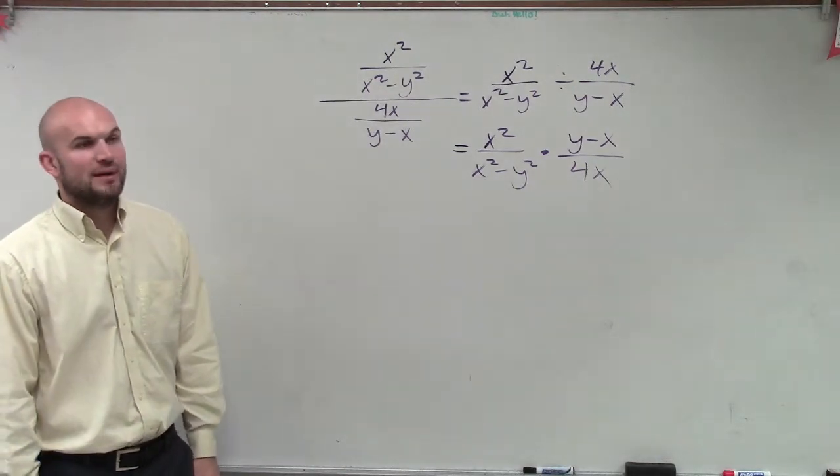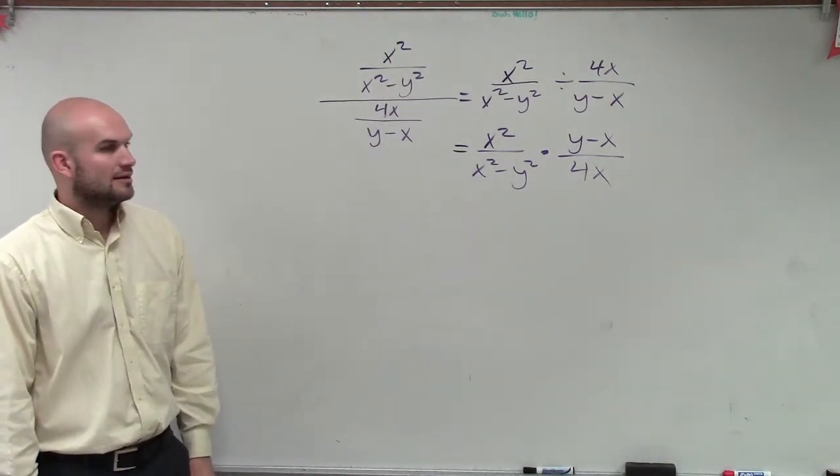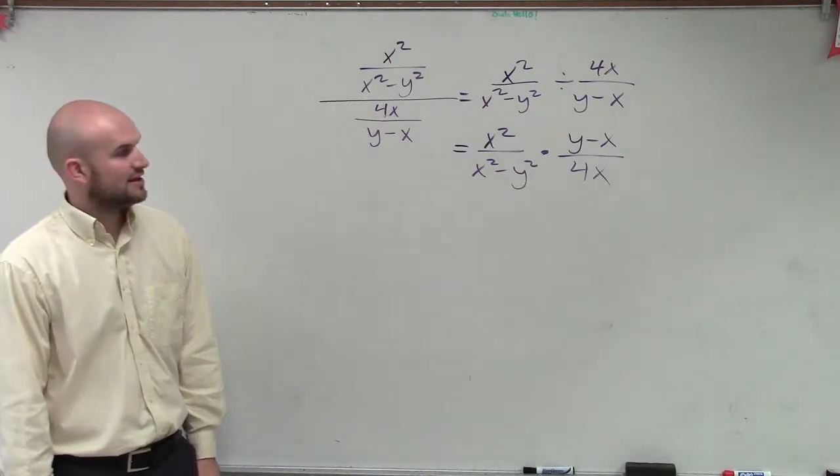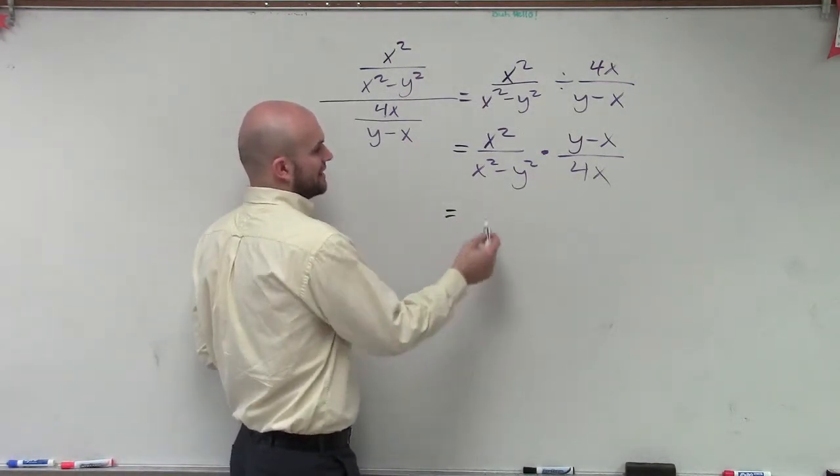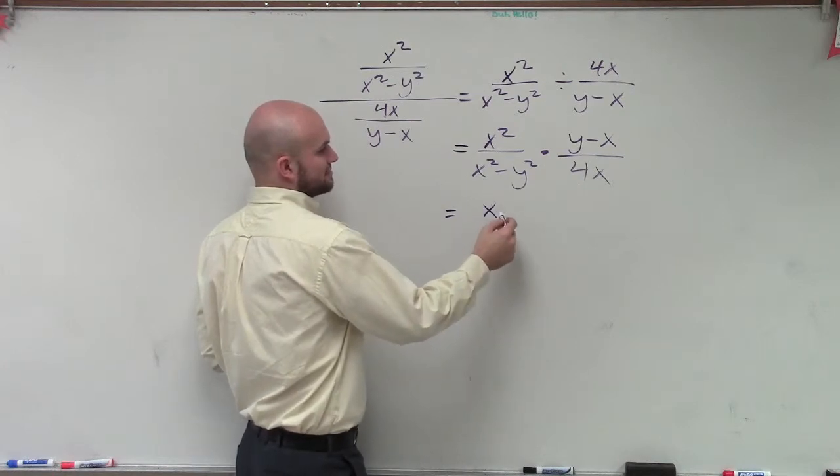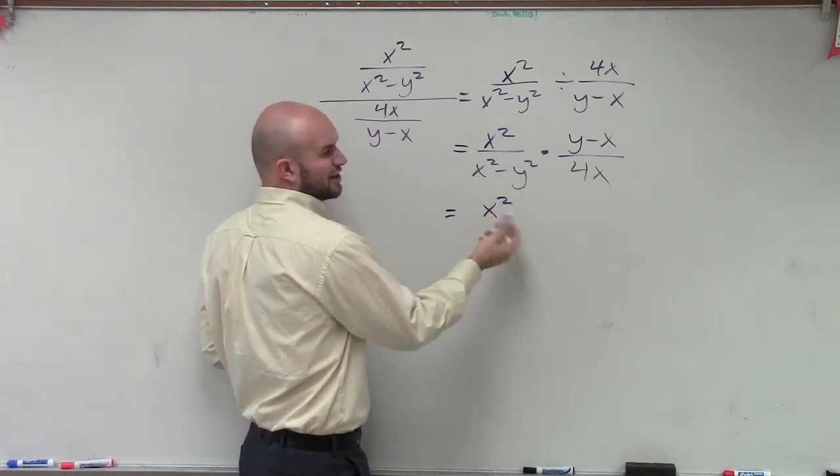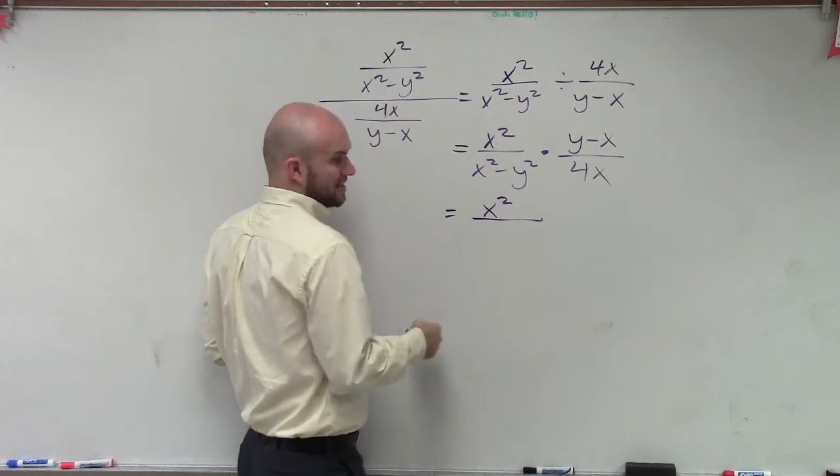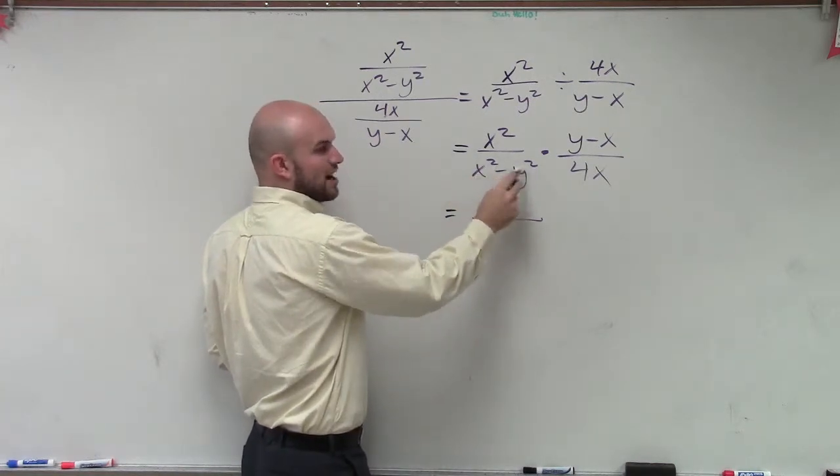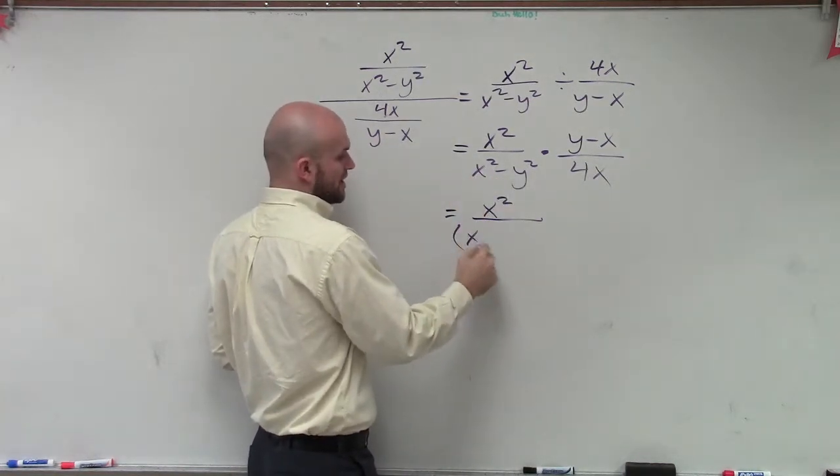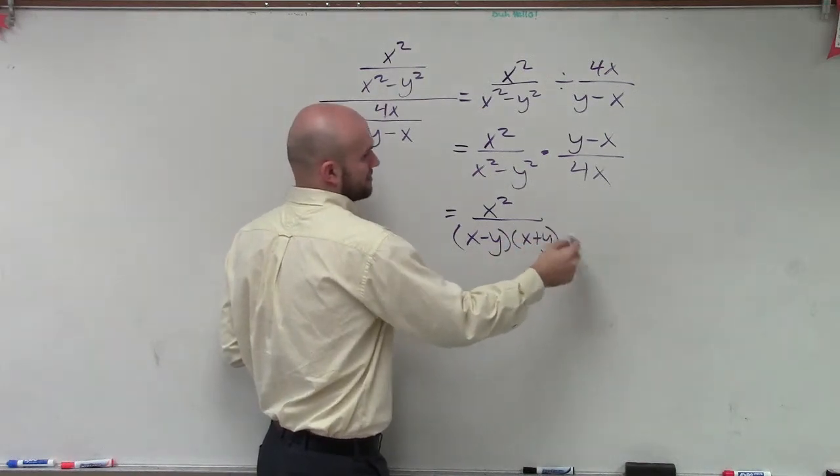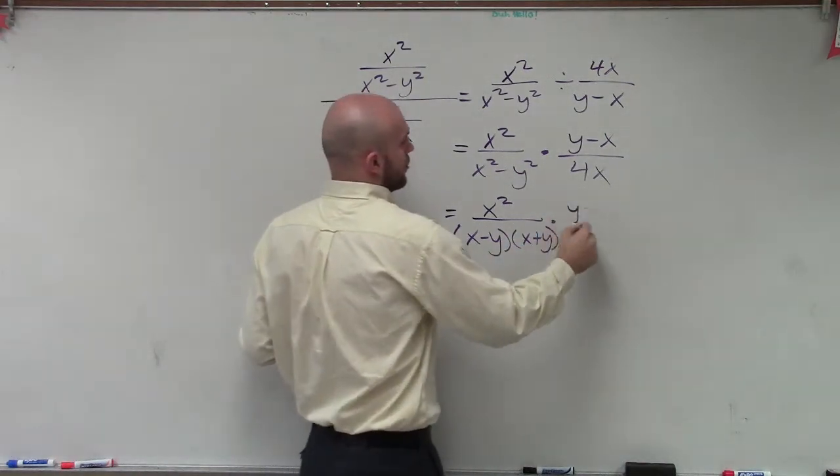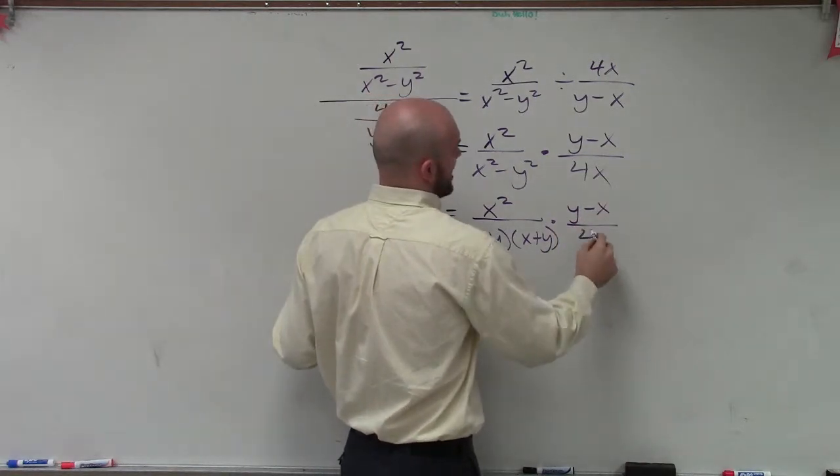so now ladies and gentlemen, we need to go back and see how we get this. So what I have here is x squared. I could write this as x times x, but I don't think you guys need that. x squared minus y squared is a difference of two squares, which is x minus y times x plus y times y minus x divided by 4x.